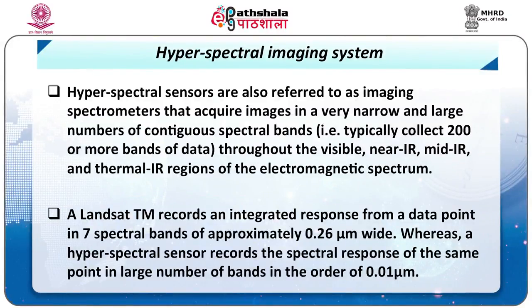The third category is the hyperspectral imaging system. Hyperspectral sensors, also referred to as imaging spectrometers, acquire images in very narrow and large numbers of contiguous spectral bands — typically collecting 200 or more bands of data throughout the visible, near-infrared, mid-infrared, and thermal infrared regions of the electromagnetic spectrum. A Landsat Thematic Mapper records an integrated response from data points in seven spectral bands of approximately 0.26 micrometers wide, whereas a hyperspectral scanner records the spectral response in a large number of bands on the order of 0.01 micrometers.